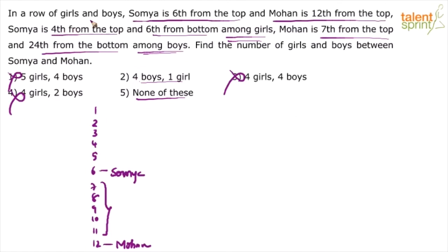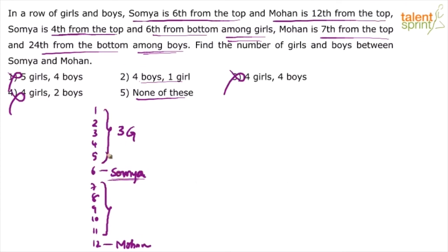The next statement says Soumya is 4th from top and 6th from bottom among girls. Soumya is 4th from top among girls — meaning she is the 4th girl. So obviously there are 3 girls above Soumya. Remember, there are total 5 positions between Swamya and Mohan. So 3 of those 5 are girls. If 3 are girls, the other 2 are boys. So in those 5 positions, there are 3 girls and 2 boys.